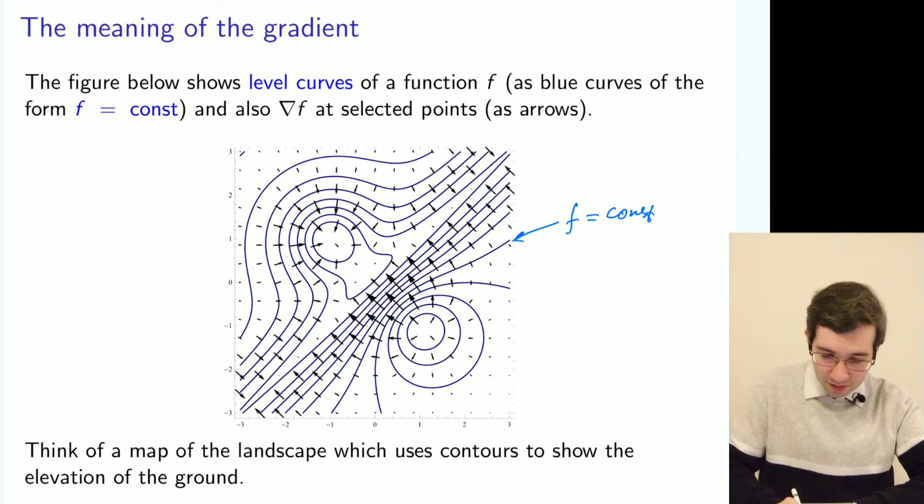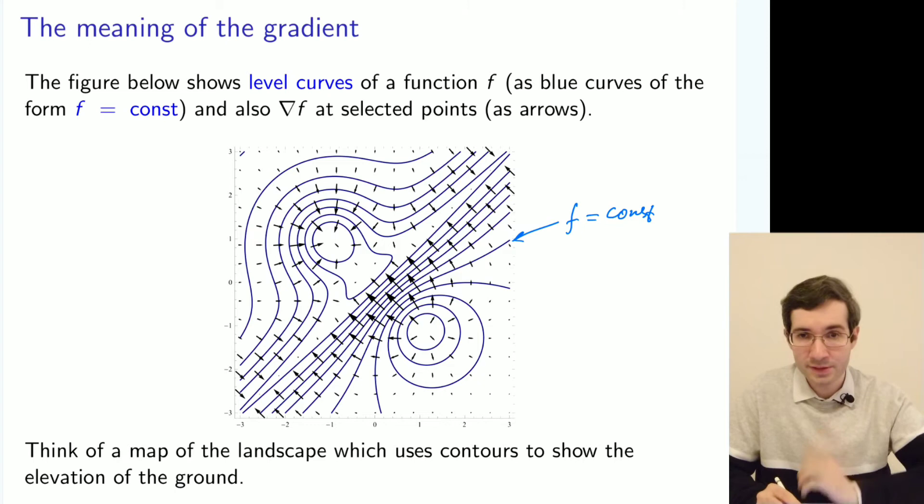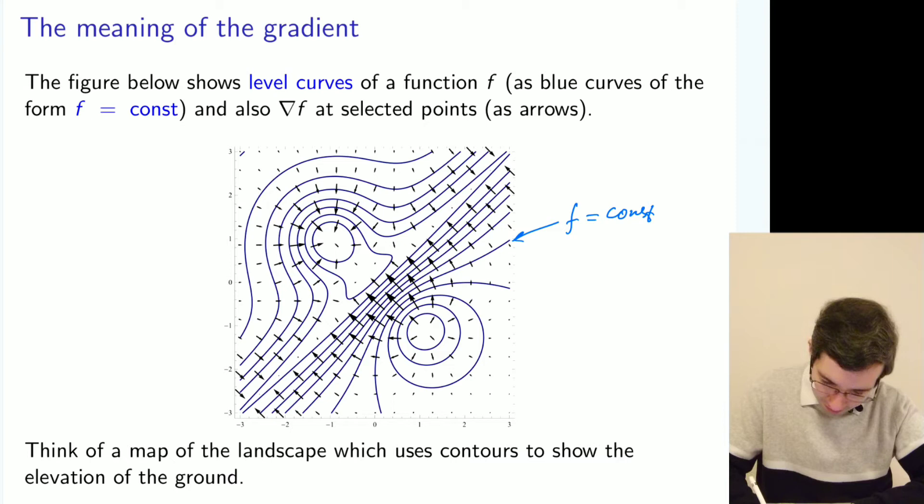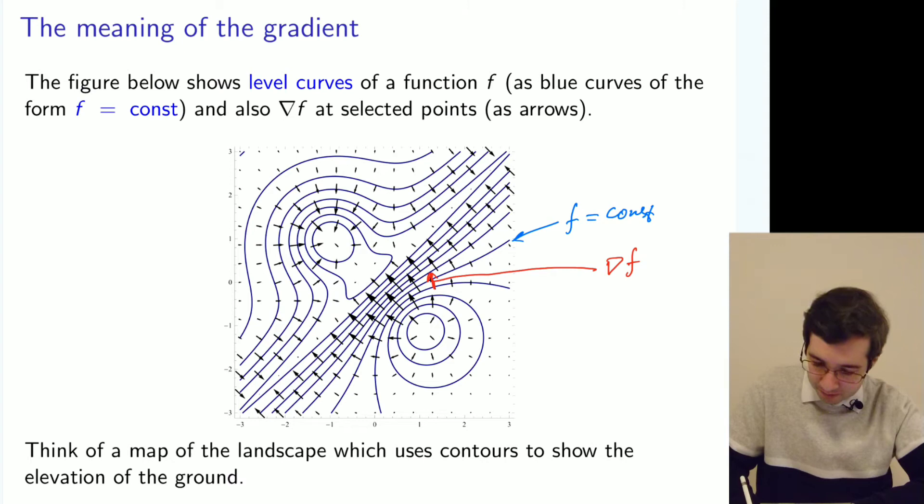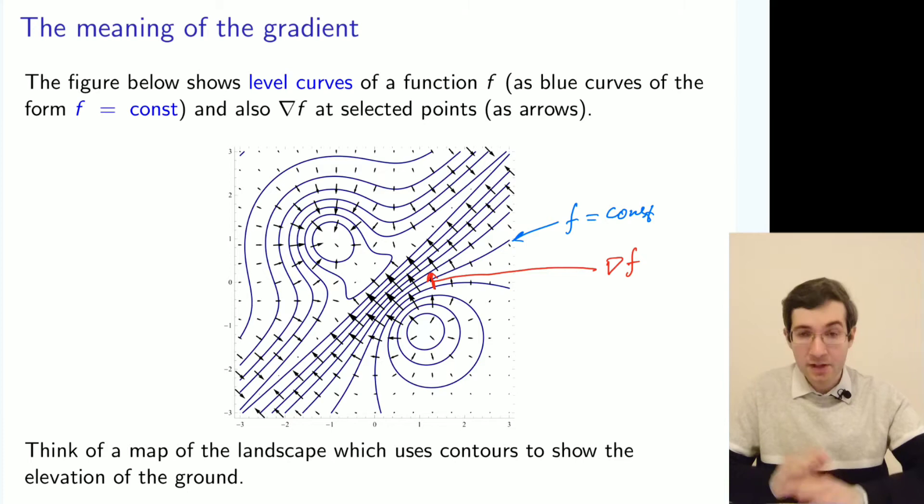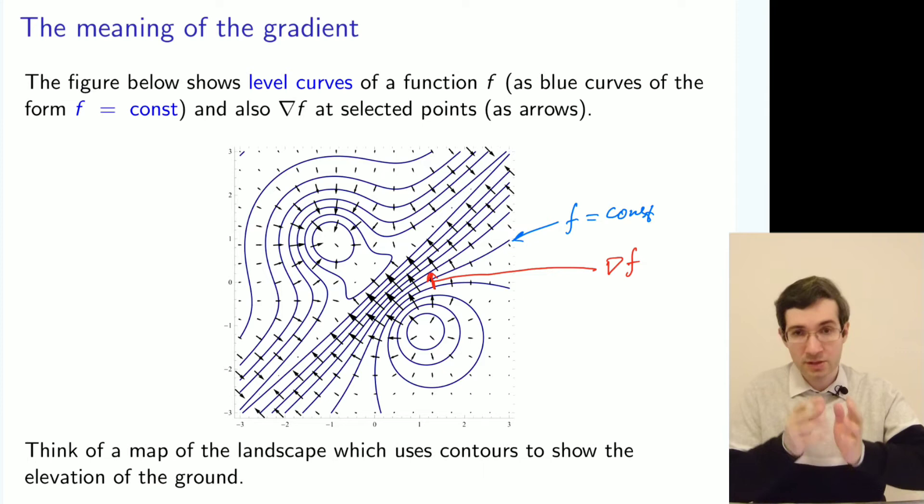Then the gradient will be defined at every point as an arrow, with direction and magnitude. At different points, the gradient will have, in general, both different direction and different magnitude.